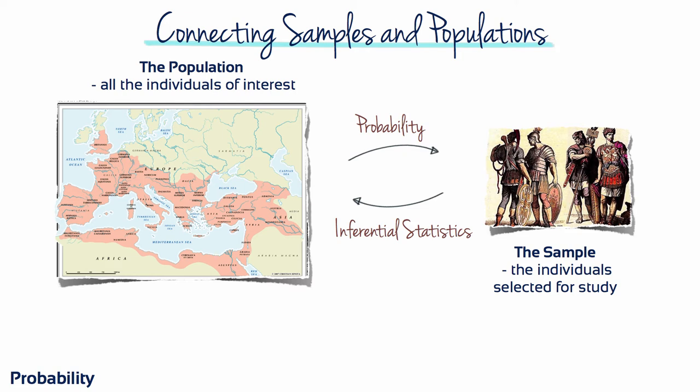To sum up what we've said so far: probability is used to predict what kind of samples are likely to be obtained from a population. Probability is to do with proportions and populations, and establishes a mathematical connection between samples and their populations. Inferential statistics rely on this connection when they use sample data as the basis for making conclusions about populations.